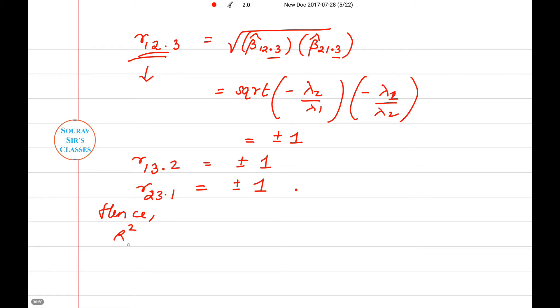So hence, now let us write the value of coefficient of determination. R²₁.₂₃ will be r₁₂² plus r₁₃.₂², and this will be equal to 1. Similarly, we will get R².₁₃ equal to 1.